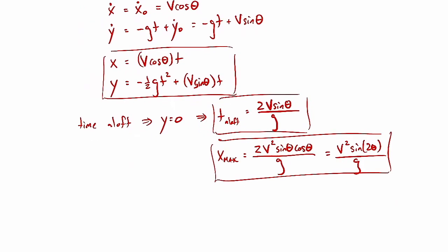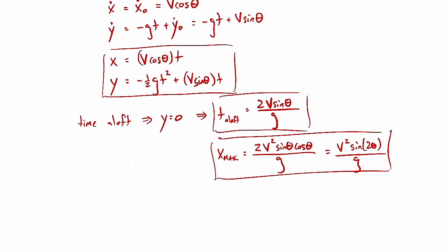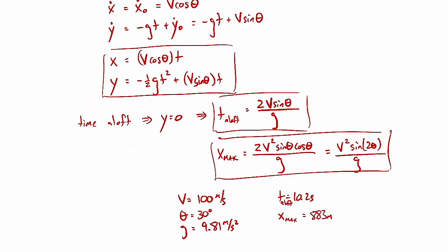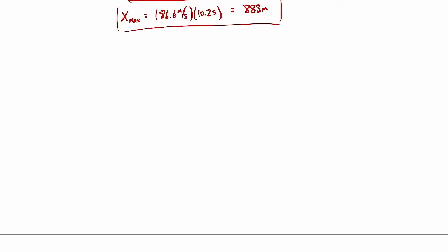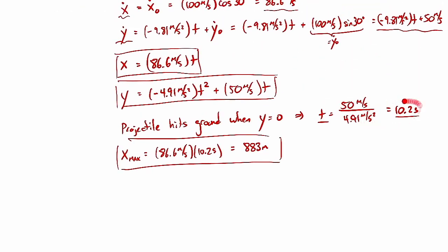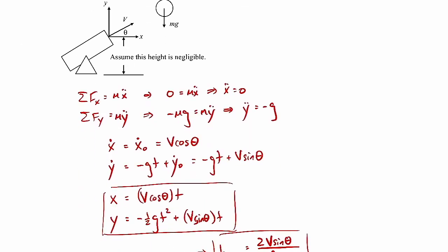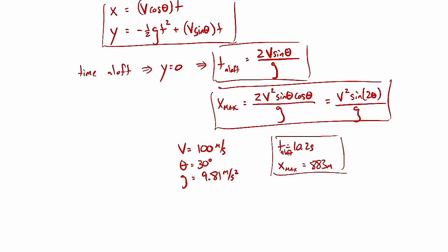Finally, we plug in the numbers: v = 100 m/s, θ = 30°, g = 9.81 m/s². This gives t_aloft = 10.2 seconds and x_max = 883 meters — the same values we got with the numerical approach. We just took the symbolic formulas and substituted the numbers at the very last step.